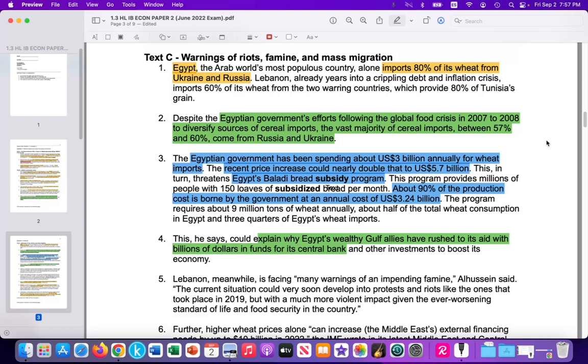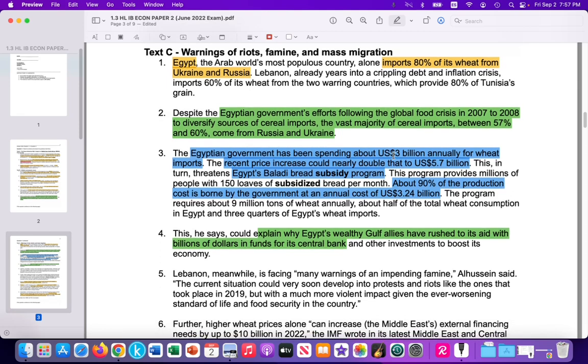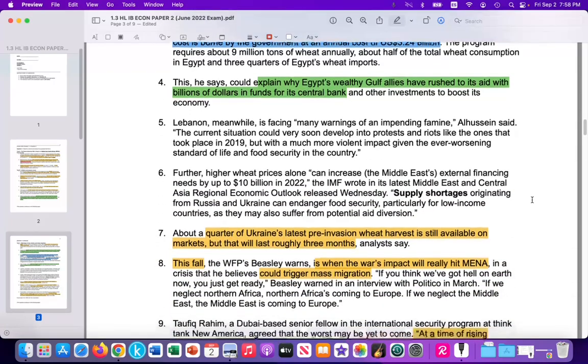Text C looks at consequences of this. In Egypt's case, the Egyptian government spends $3 billion annually on wheat imports. And they have a subsidy program making food available for the local population. But that comes at a cost to the government. The subsidy program before the rising food price is about $3 billion for wheat subsidies. But that could double to $5.7 billion. And you're going to see how that's going to be useful in this particular video for the question we're going to tackle.